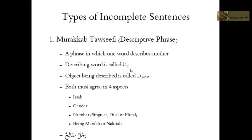For example, 'the red rose' — Sifah is 'red', and the object being described is called Mousuf, so 'the rose' is the Mousuf. Both must agree in four aspects: they must have the same I'rab — both Rafa', Nasab, or Jar. The gender must be the same. The number must be the same — one rose, one red; two roses, two reds.